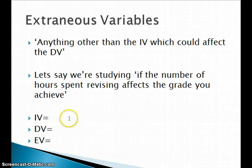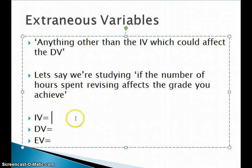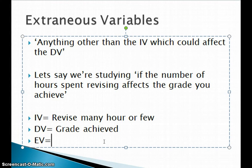An extraneous variable is another type of variable. The IV is the thing we change — the condition we control, like music or no music — and the DV is what we measure. We assume the IV is the thing that causes or affects the DV. For example, if we're studying whether the number of hours spent revising affects the grade you achieve, the IV is the number of hours spent revising and the DV is the grade achieved. An extraneous variable is anything else that affects the results — anything other than the IV that could affect the grade you achieve.